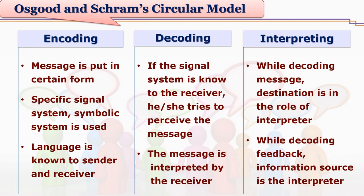For creating this feedback message, you again try to find out some system of symbols and signs which is familiar to the person to whom you are sending feedback. Giving form to your feedback in some sign system is the process of encoding. Here, the receiver becomes a sender. This encoded message is sent back to the person who originally sent the message.